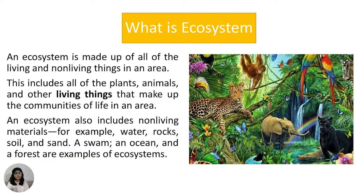What is an ecosystem? An ecosystem is made up of all living and non-living things in an area. This includes all plants, animals, and other living things that make up the community of life in an area.